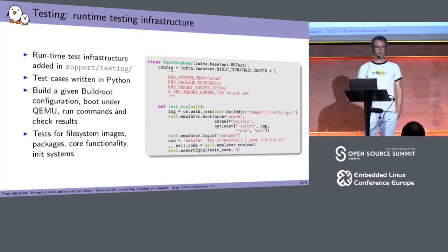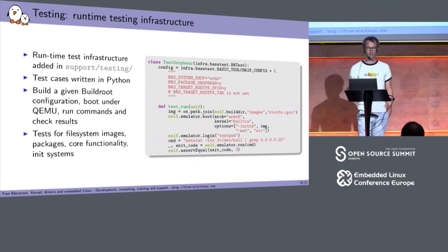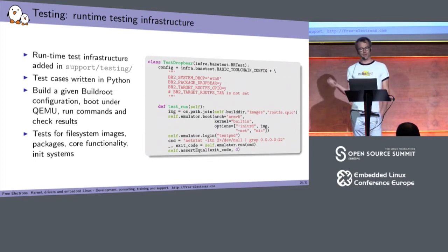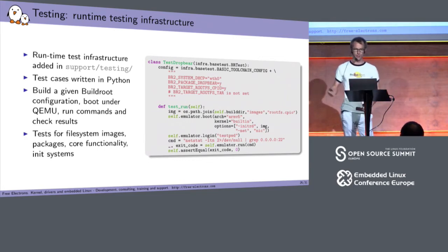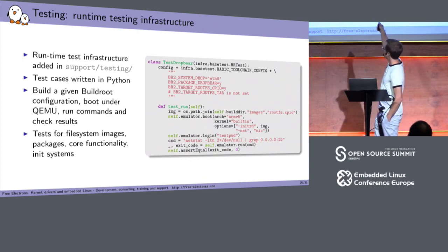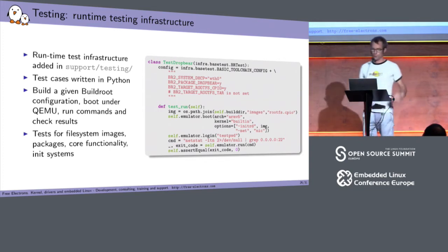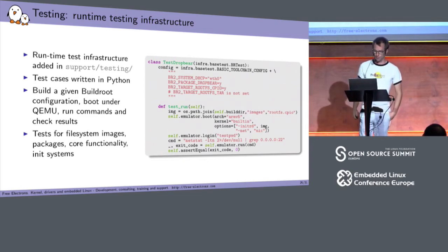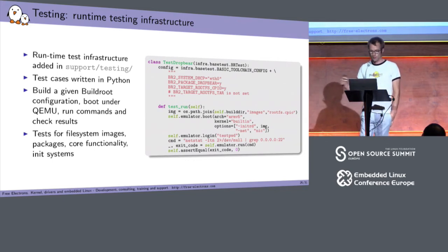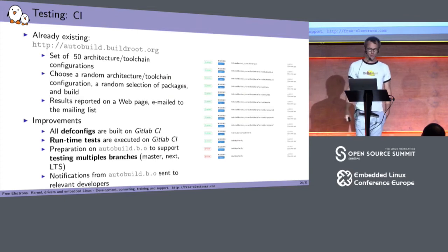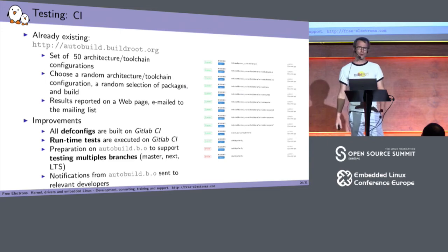Another big area where we improved things is testing, CI, and quality. We added a runtime testing infrastructure that was just merged this spring and then improved this summer. The idea is that we were doing build-time testing before — take a Buildroot configuration, it builds, but perhaps it doesn't run at all. So we wrote a small Python test infrastructure which allows us to describe a Buildroot configuration, put it in QEMU, and verify something specific — for example, that an SSH server is running after building Dropbear. Some tests are more complicated. We're trying to make this testing infrastructure grow to test more features of Buildroot and make sure they don't break.